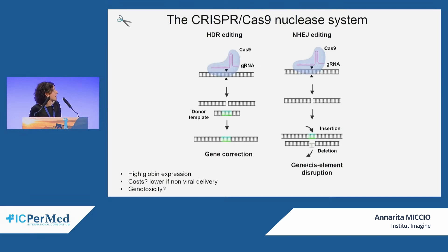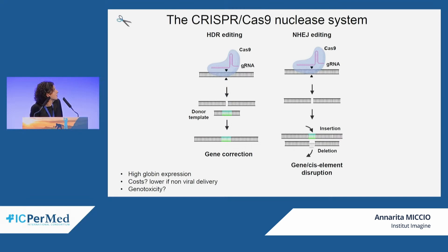Genome editing has been explored to directly correct endogenous loci, taking advantage of endogenous gene regulation to achieve high levels of globin expression. Many groups have used the CRISPR-Cas9 nuclease system, which generates a double-strand break at a specific region of the genome, repaired via the homology-directed repair pathway using a donor template carrying the desired edits. This can be used to correct the disease-causing mutation.